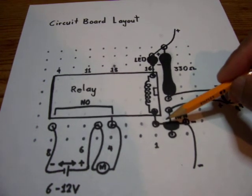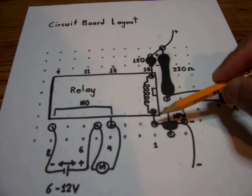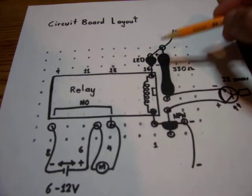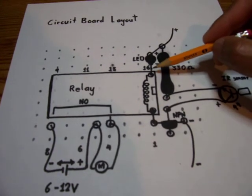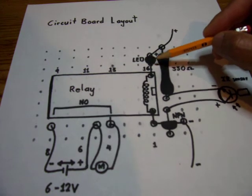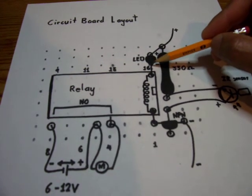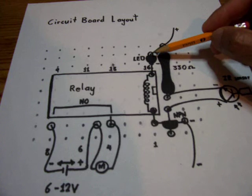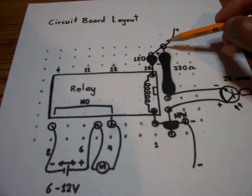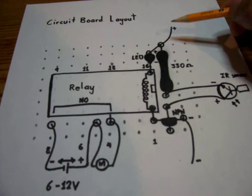The collector of the transistor is connected to pin 1 of the relay. Pin 16 of the relay is connected to the cathode of the green LED. The anode of the green LED is connected to the positive supply of the 9 volt battery.